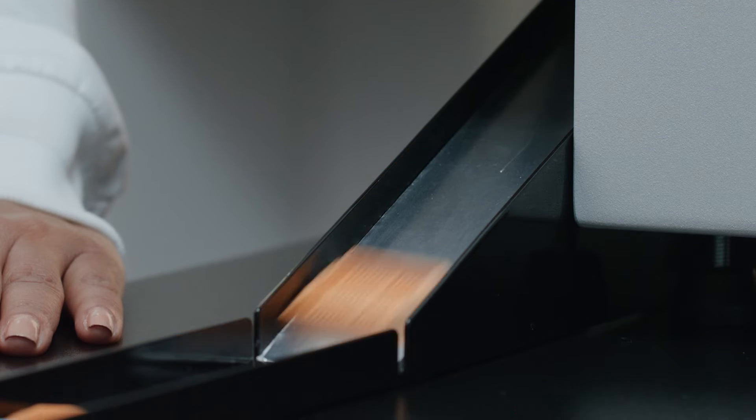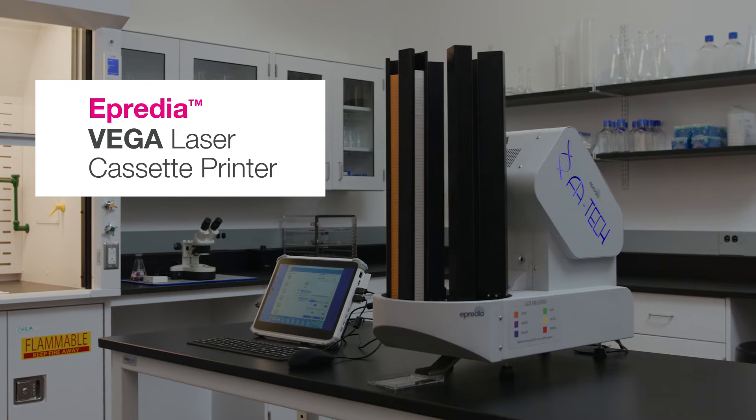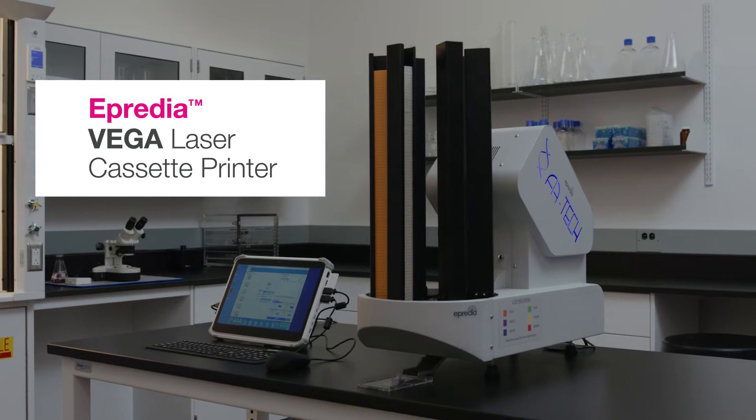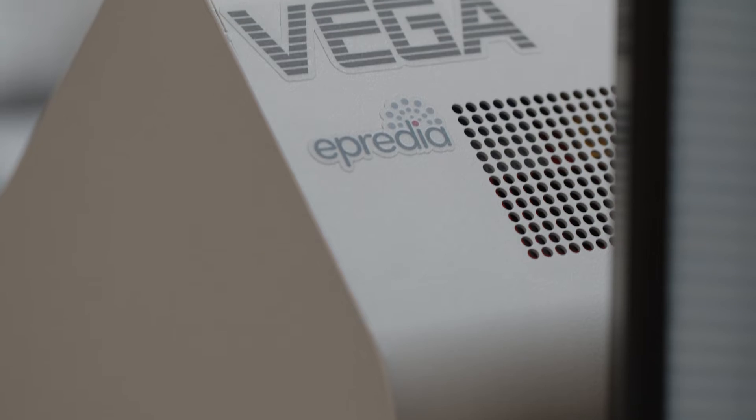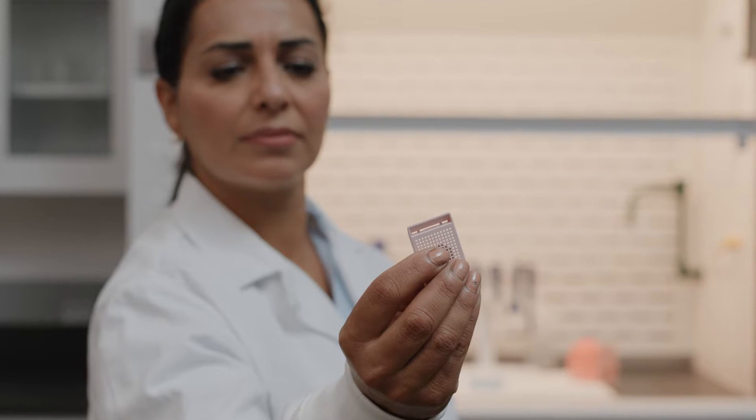Comprehensive sample identification demands advanced printing capabilities. The Apridia Vega Laser Cassette Printer offers the high-resolution printing you need for labeling and identifying precious tissue samples.